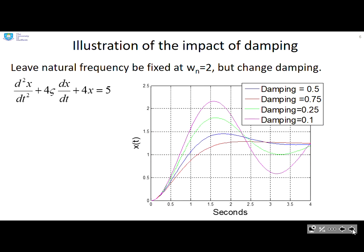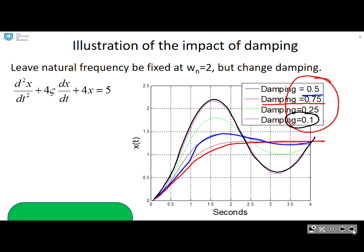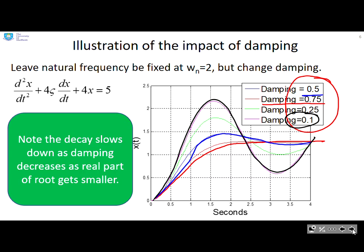So an illustration of the impact of damping. We've changed this damping ratio to have four different values and looked at how the response varies. With a damping of 0.75, we've got this red curve, minimal, you probably don't even notice it, oscillation. If I take the damping to 0.5, this blue curve, you can see now I've got a bit of oscillation. If I take the damping all the way down to 0.1, you can see a lot of oscillation and a much slower convergence. So the decay slows down as the damping decreases and you get more oscillation.